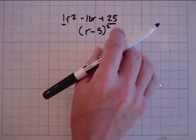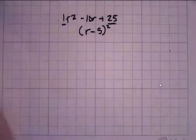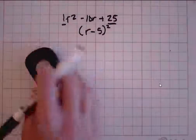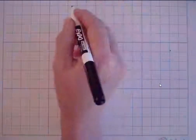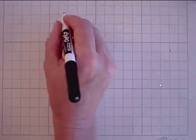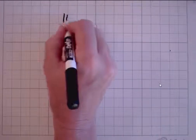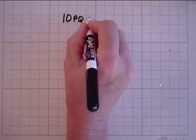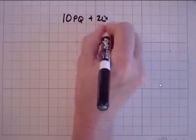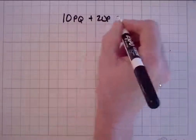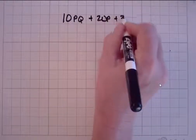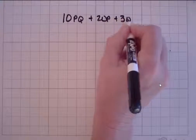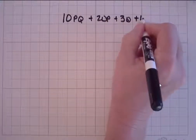If you've not done that yet, now would be a very good time to do it. Memorize the square of 1 all the way up to 15, and that should do you just fine. Here's another one: 10pq plus 20p plus 3q plus 6.